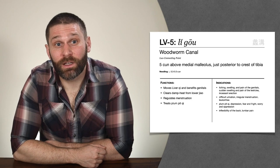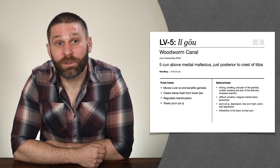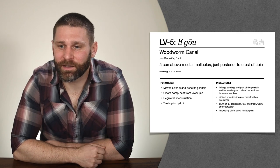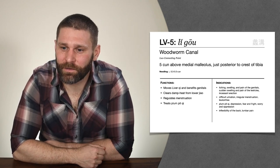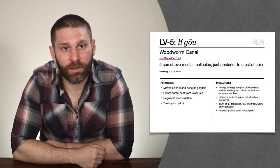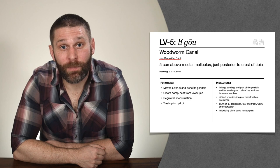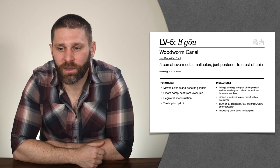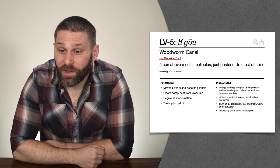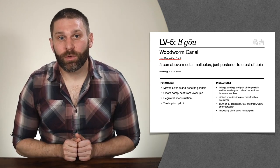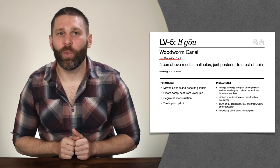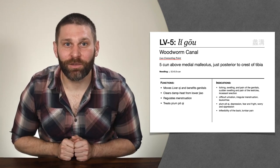Liver 5 is a point I really like — I feel like people need to use this point more. People are using Liver 3 too much, and there are a lot of times I like to use Liver 5 instead. Liver 5, Li Gou, 'Wormwood Canal,' is the luo connecting point, located on the medial leg five cun above the ankle. Remember, luo connecting points are good for disorders along the luo connecting channel. Where does the luo connecting channel of the liver go?